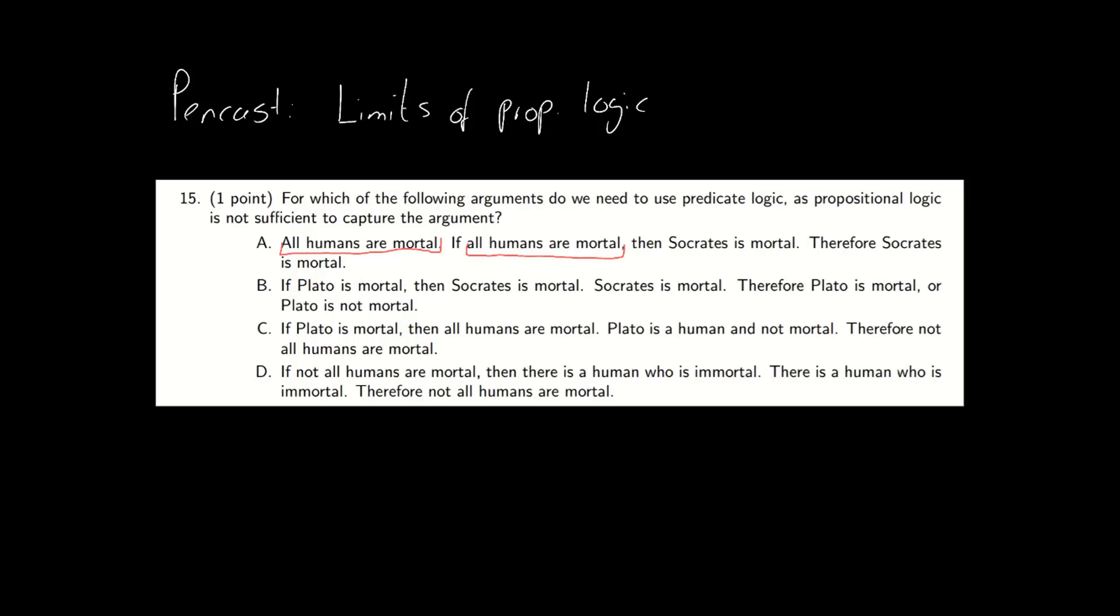Let's notice that the phrase 'all humans are mortal' is repeated twice, as is 'Socrates is mortal.' So if we introduce the letters p and q for these phrases, what do we get? We get p, p implies q, therefore q. Well this is a valid argument so this seems to work out.